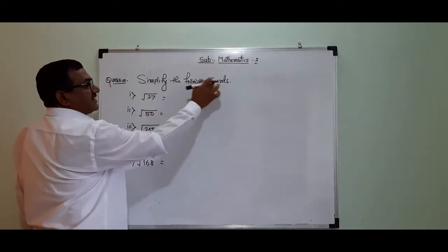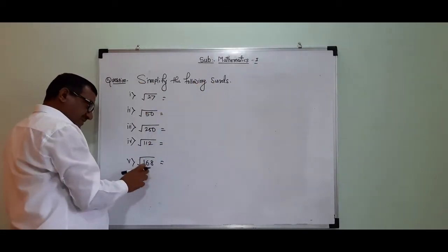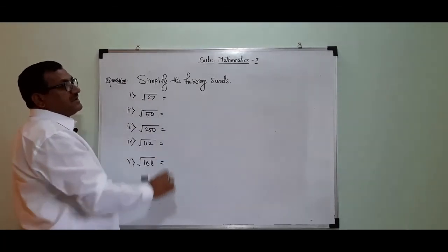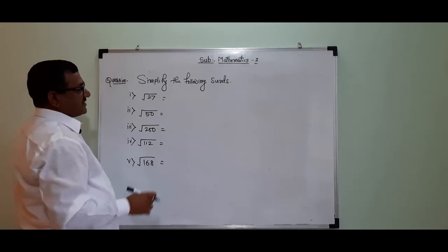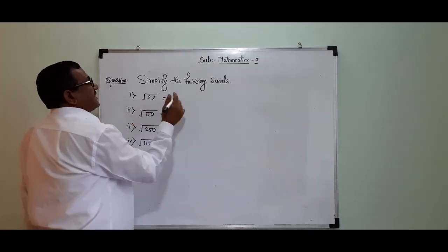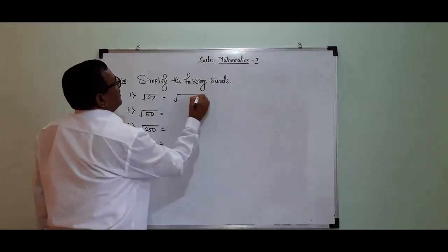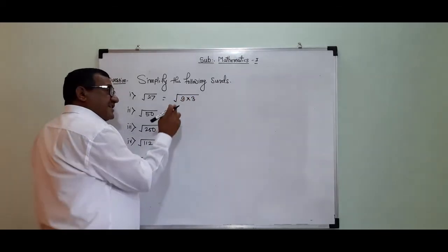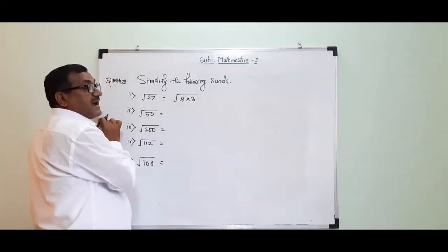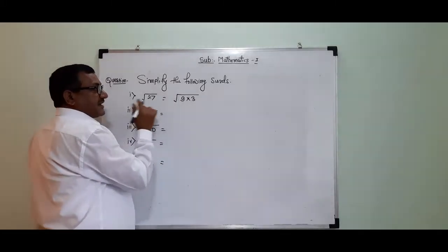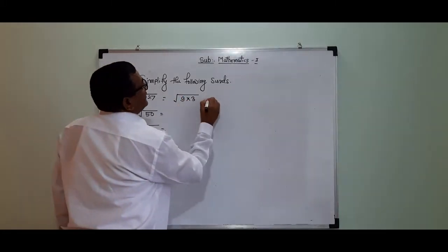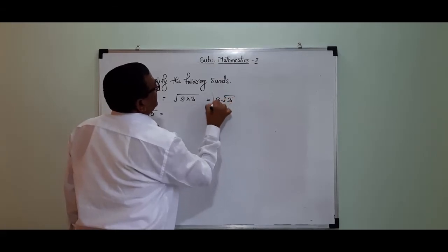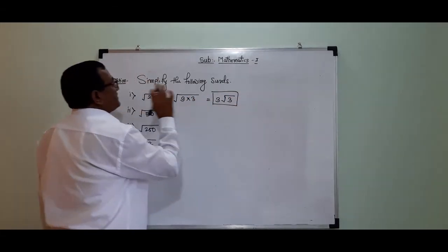Simplify the following surds. The next surd is the same. The simplification gives 100. The cube root of 9 gives approximately 3.37. This is the simplification.